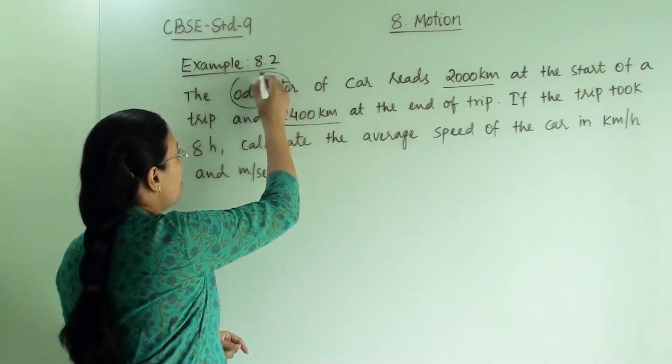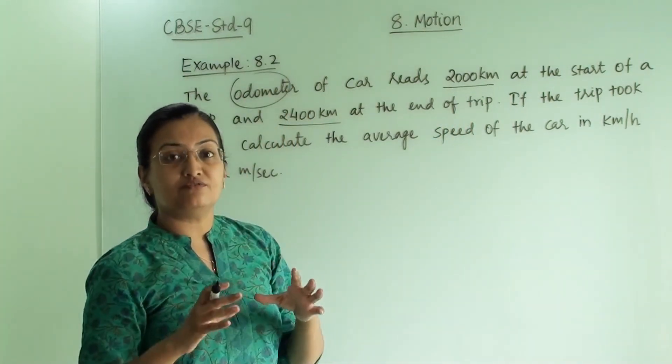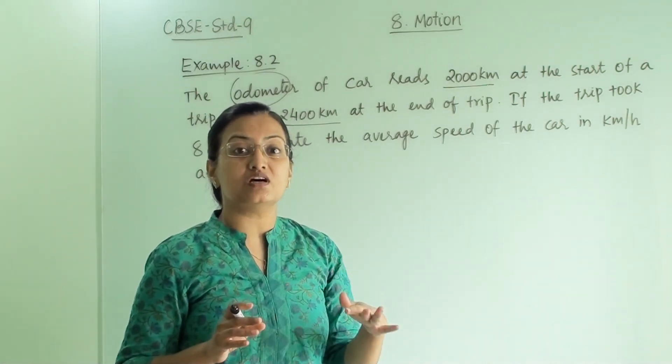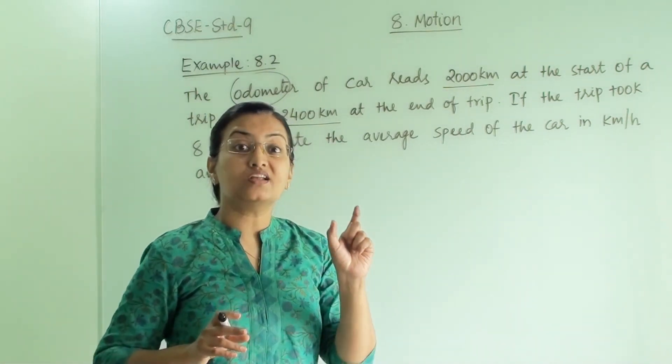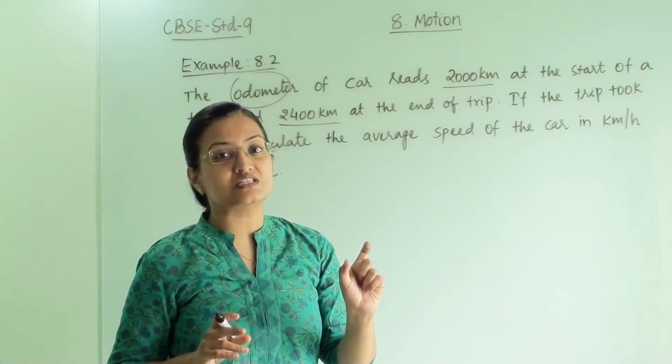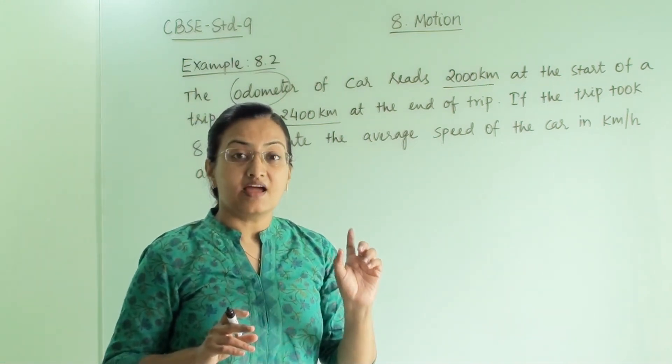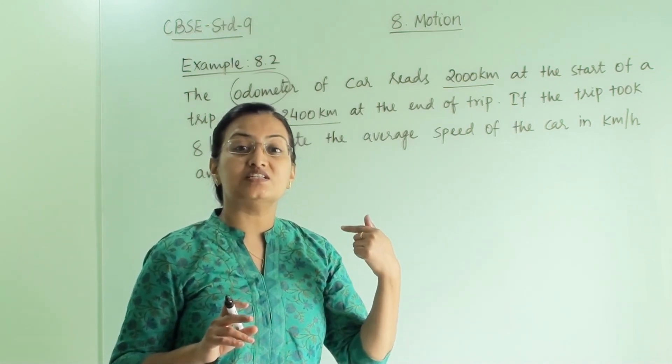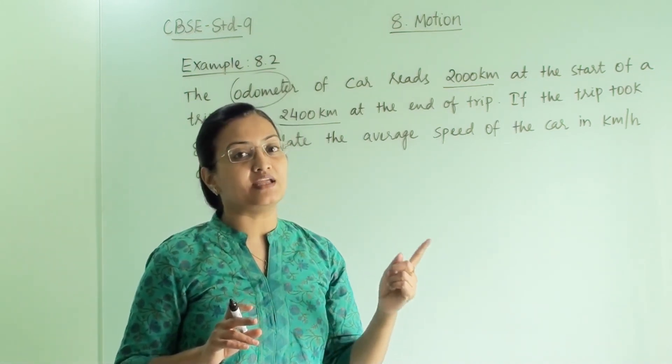Now what is odometer here? Odometer is a machine which is fitted inside the car which shows us a trip reading. It tells us how much distance has been covered by the car and how much distance has been covered in one particular trip.